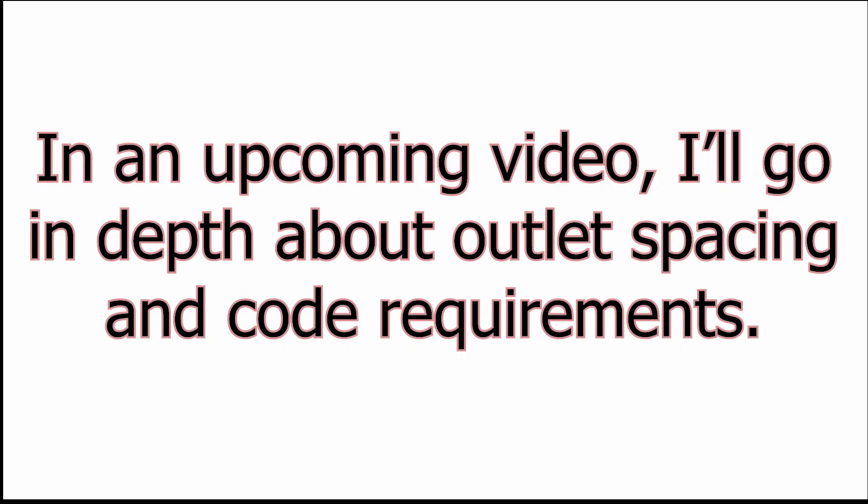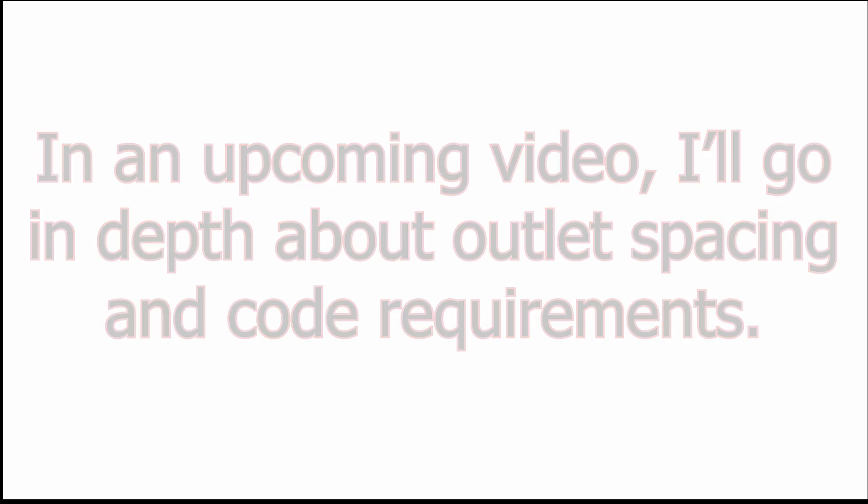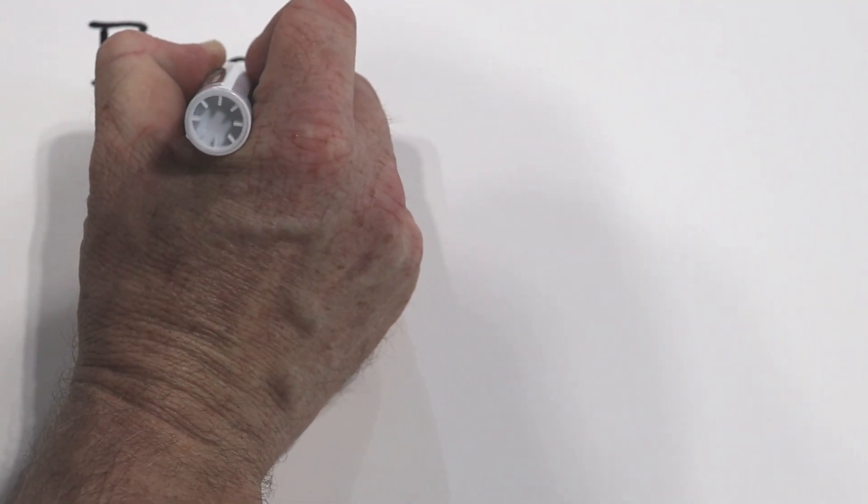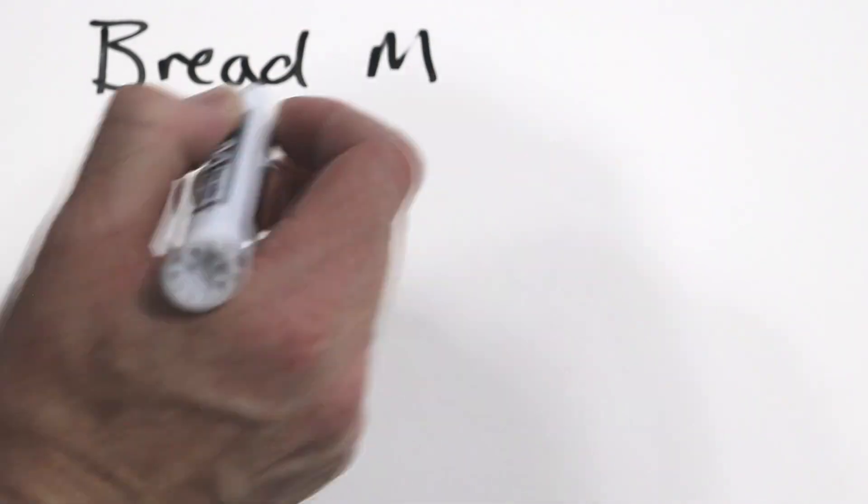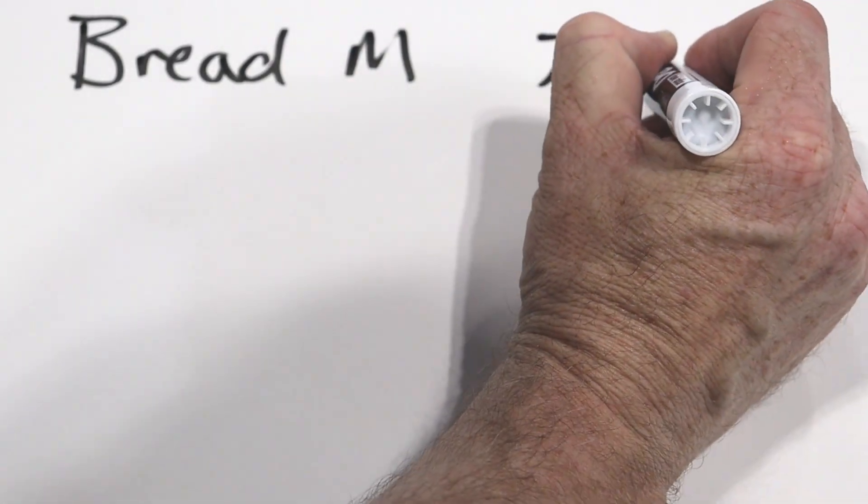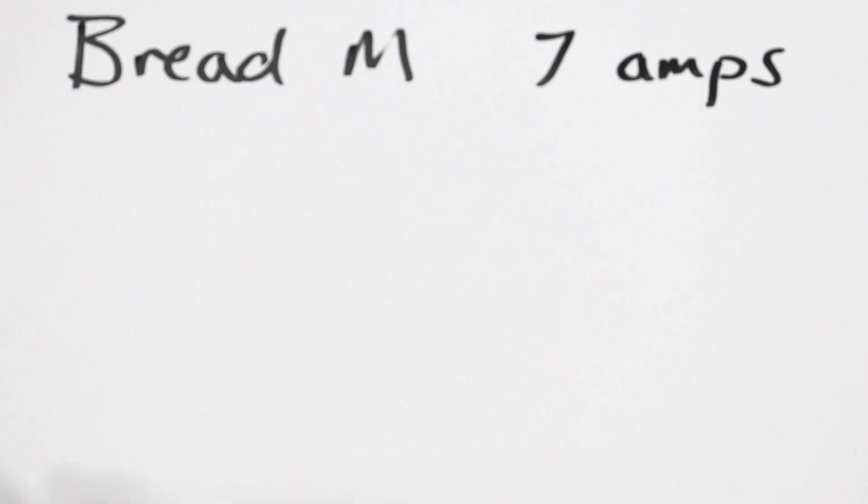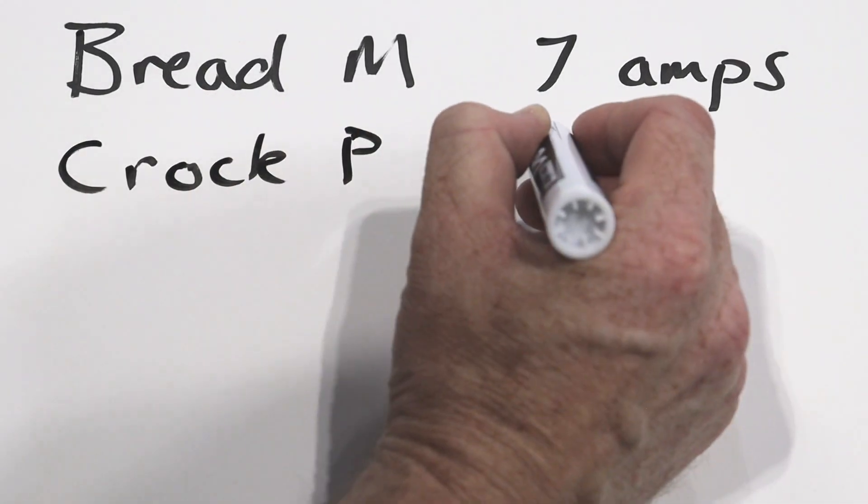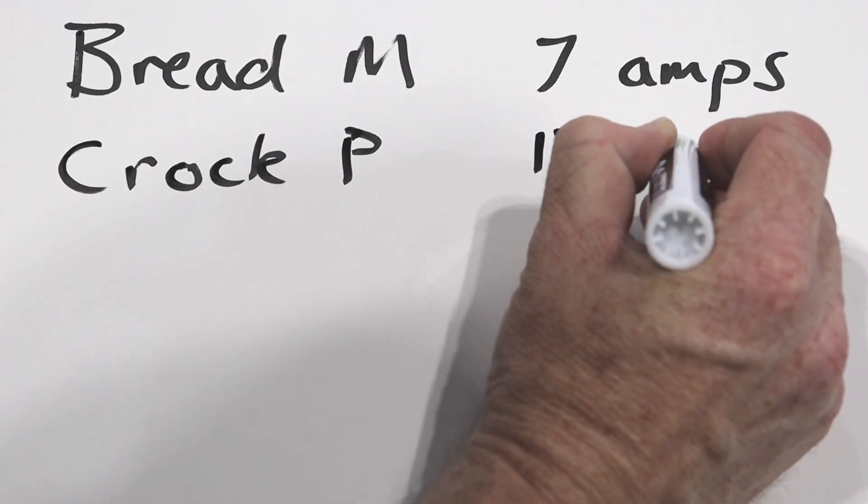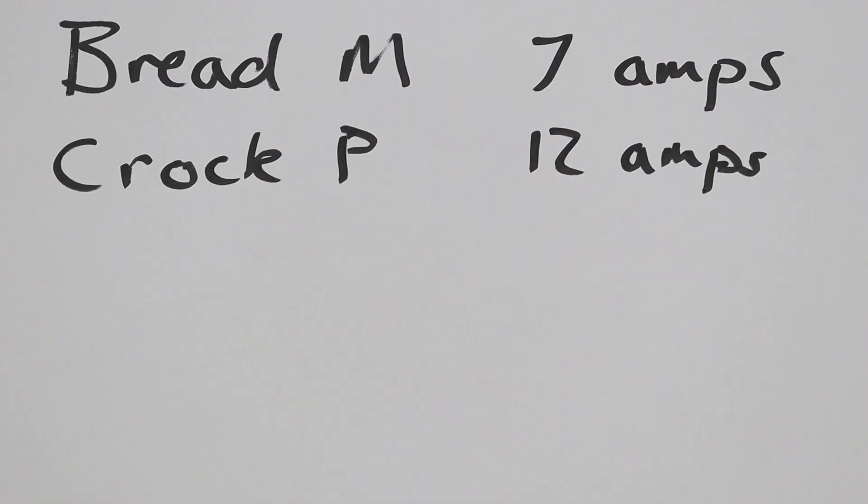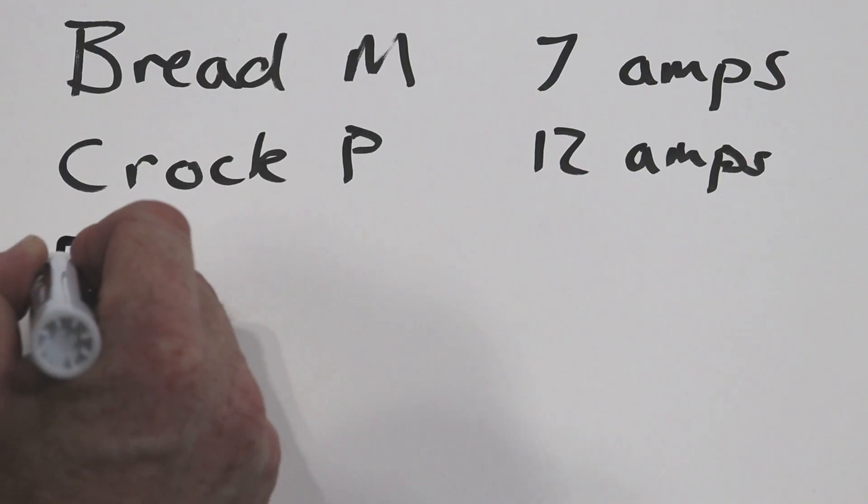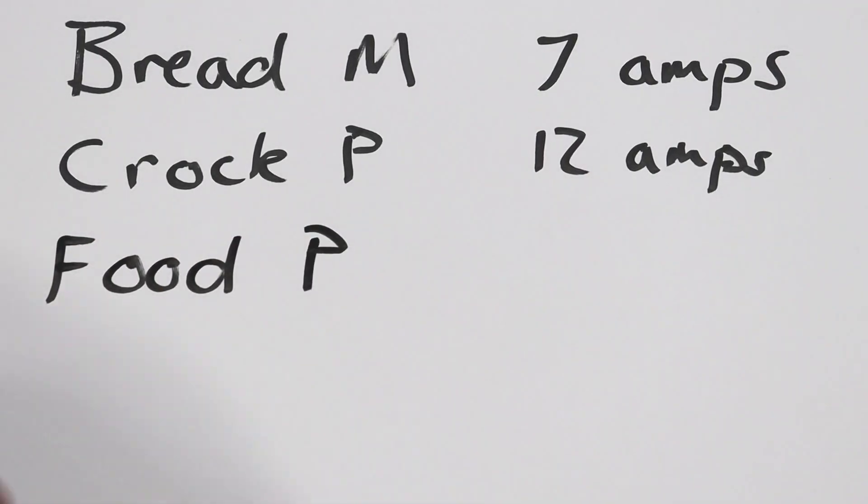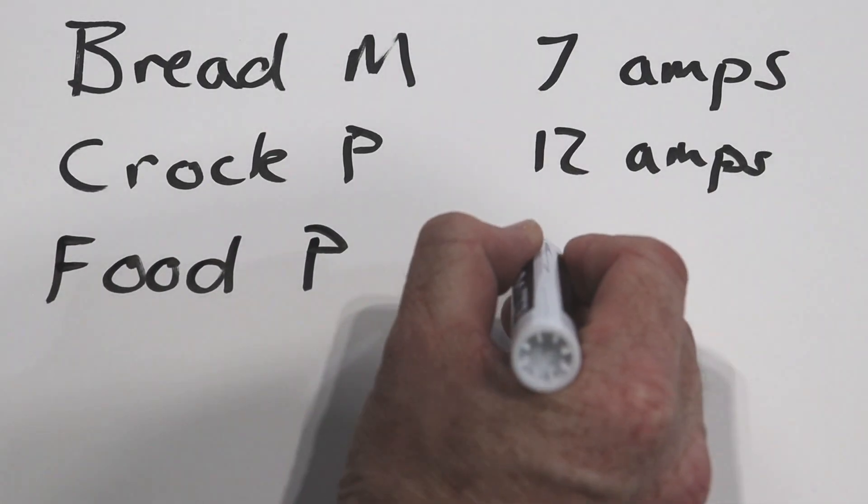So now I'm going to remodel my kitchen and my wife loves to cook and bake and do all kinds of stuff. So how many outlets do I need to make sure that I have in this new kitchen? She wants to put in a bread maker and a bread maker draws about seven amps. And then she wants a crock pot and those draw about 12 amps. And then in the middle of all this she wants to use her food processor from time to time, and it's going to draw about eight amps.